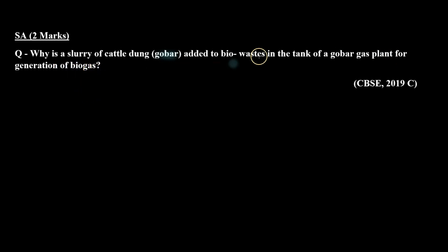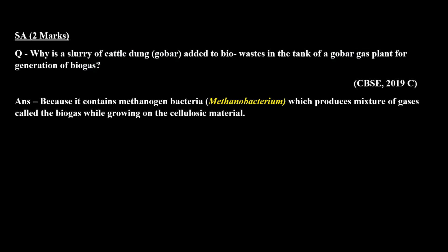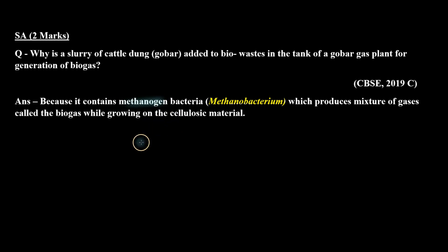This question is asking why we add cattle dung in a gobar gas plant for the generation of biogas. We do this because cattle dung contains methanogens. Methanogens are present in the rumen of cattle, and therefore they are also present in their dung, which produces biogas.